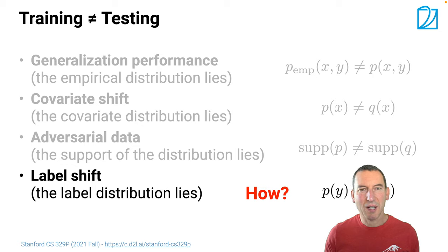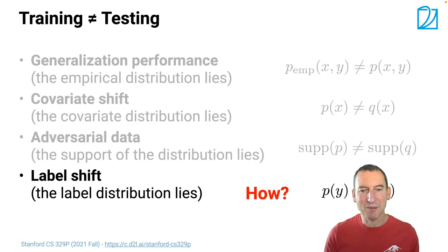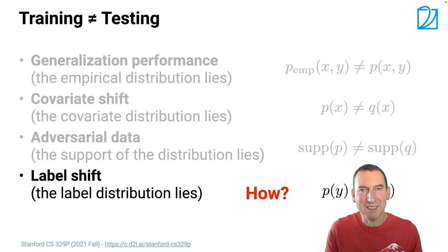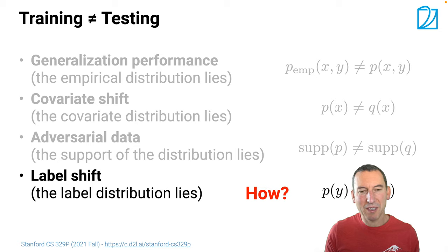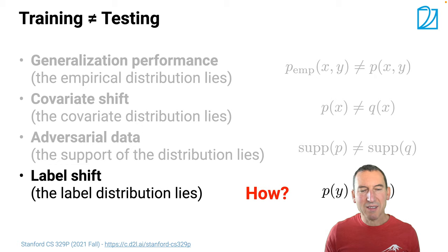We also saw what happens with covariate shift, namely when the distribution of the covariates — the x's — is different on the training and test set, while p of y given x is the same. We also encountered adversarial data and invariances. And now the last thing we're going to cover is label shift.